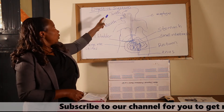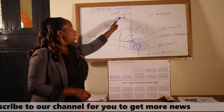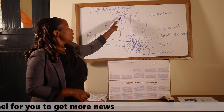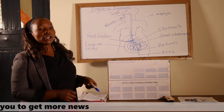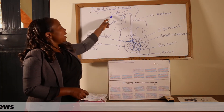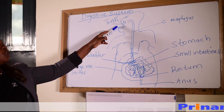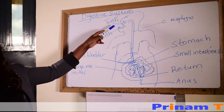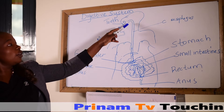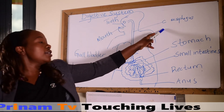This is the mouth where food is taken in. When the food reaches the mouth, it is broken into smaller particles by the teeth, which is then swallowed down into the oesophagus.